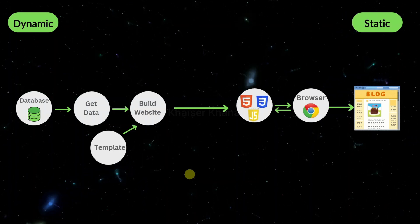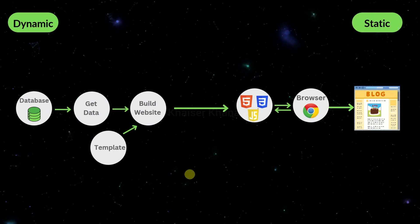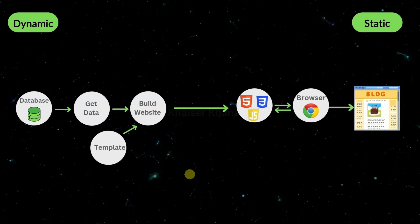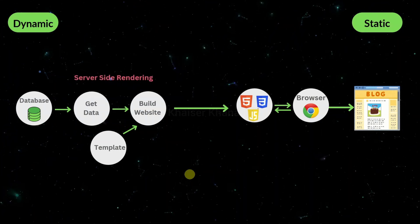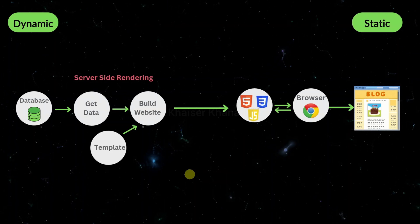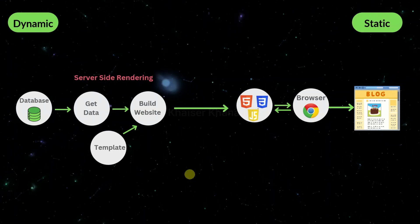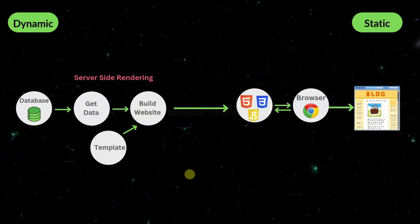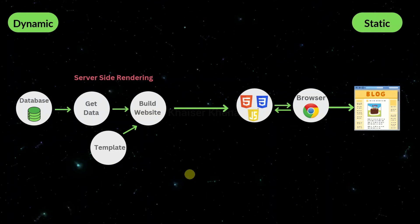Whenever the browser makes a request, the server simply sends the resulting HTML, CSS and JavaScript. These dynamic websites are rendered on the server, so they are called server-side rendering websites because our server builds the pages. In this dynamic website, content will be changing based on user actions, time, or database updates. For example, if you visit YouTube, you will not be having the same content after 5 or 10 minutes.